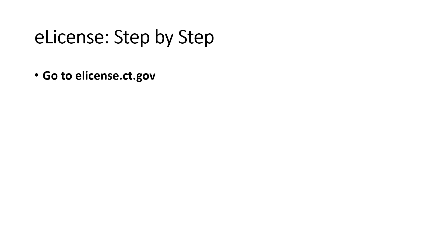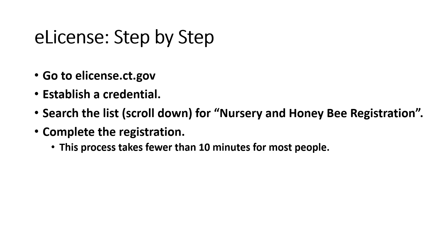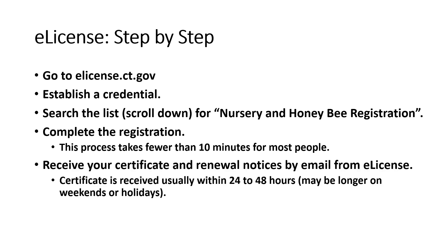Online registration generally takes just a few minutes to complete. Go to e-license.ct.gov, establish a credential, complete the registration, and wait to receive your certificate — usually within 24 to 48 hours. This process generally takes 10 minutes or less for most people. You will receive your certificate and renewal notices by email from e-license.